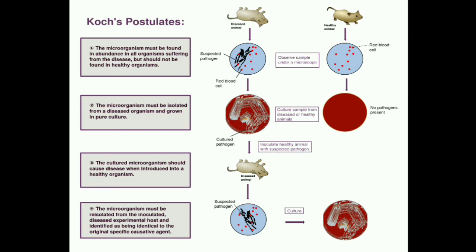Third postulate: the cultured microorganism should cause disease when introduced into a healthy organism. Fourth postulate: the microorganism must be re-isolated from the inoculated diseased experimental host and identified as being identical to the original specific causative agent.